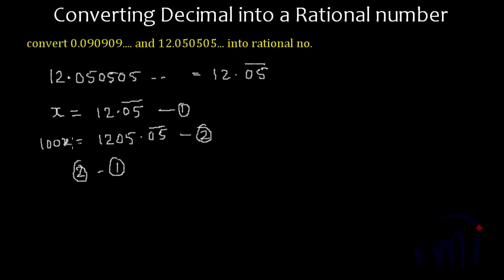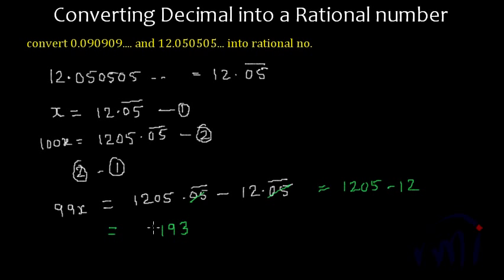100x minus x will give us 99x and this will be equal to 1205.05 repeating itself minus 12.05 repeating. This recurring 05 will cancel each other and eventually this will become 1205 minus 12, which will be equal to: 5 minus 2 is 3, 10 minus 1 is 9, and 1, giving us 1193, and this equals 99x.